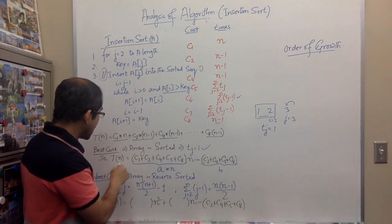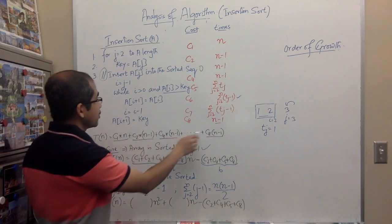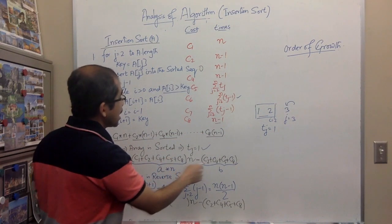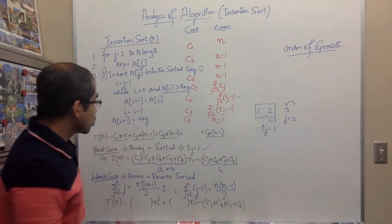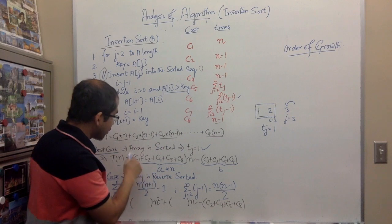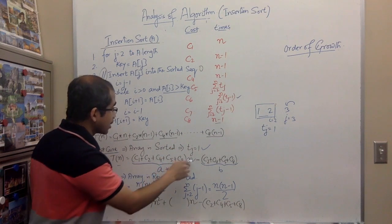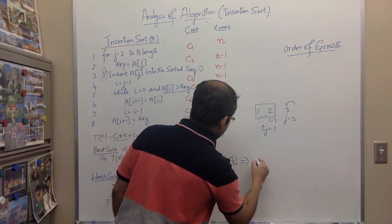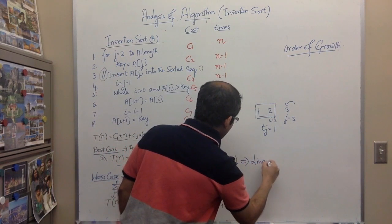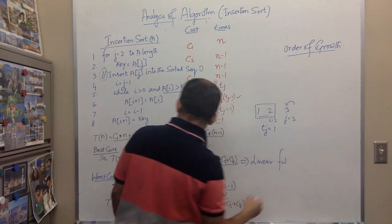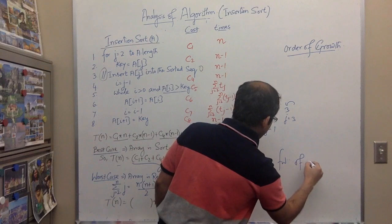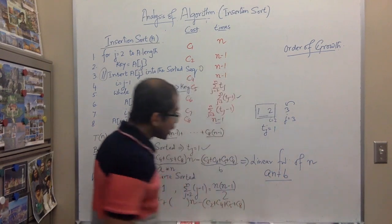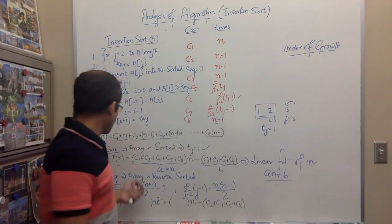When tj equals one, we simplify the total cost formula and find a result of the form (c1 + c2 + ...) times n minus some constants. This can be represented as a*n + b - a linear function of n. So the best case running time of insertion sort is represented as an + b.